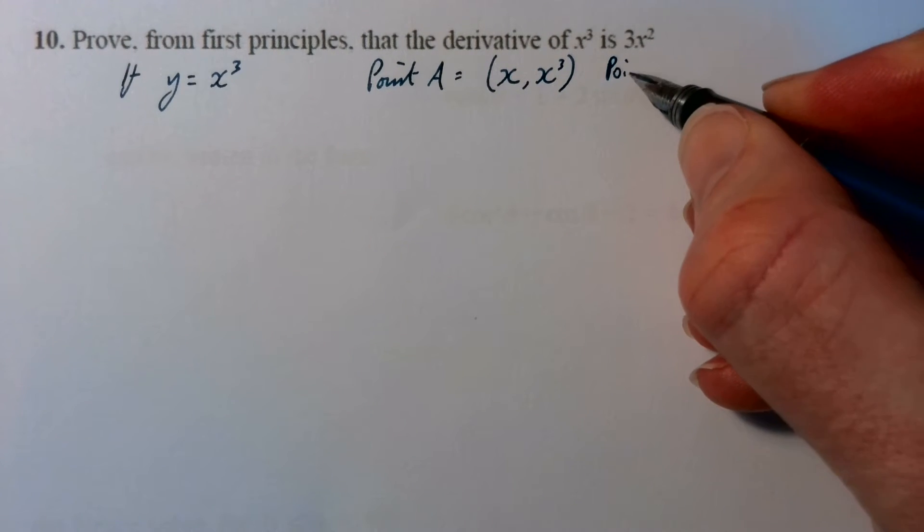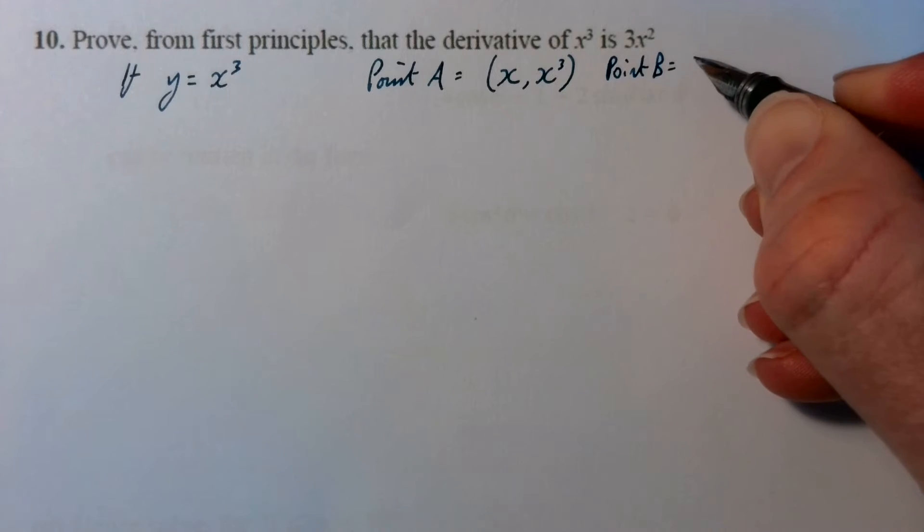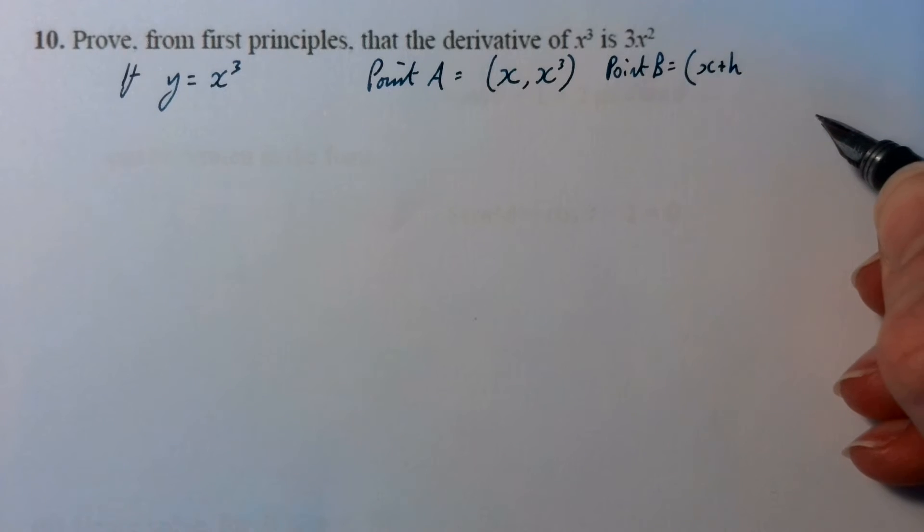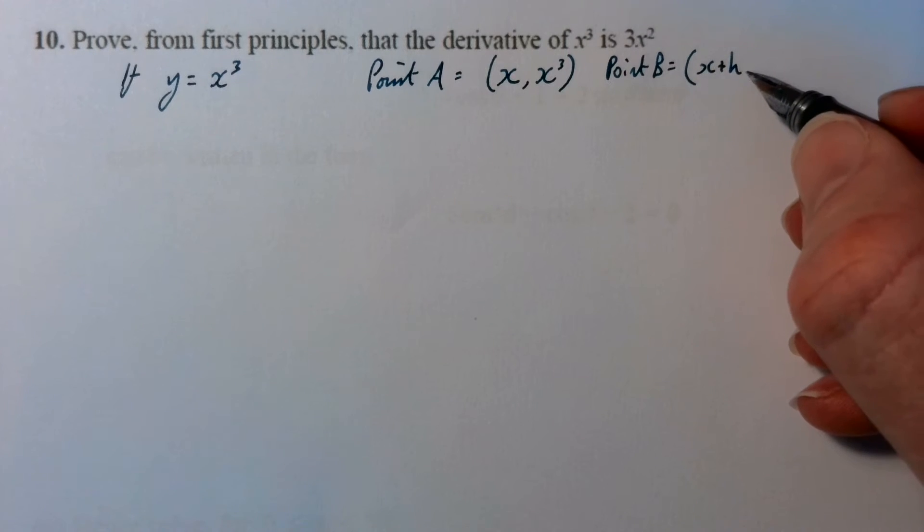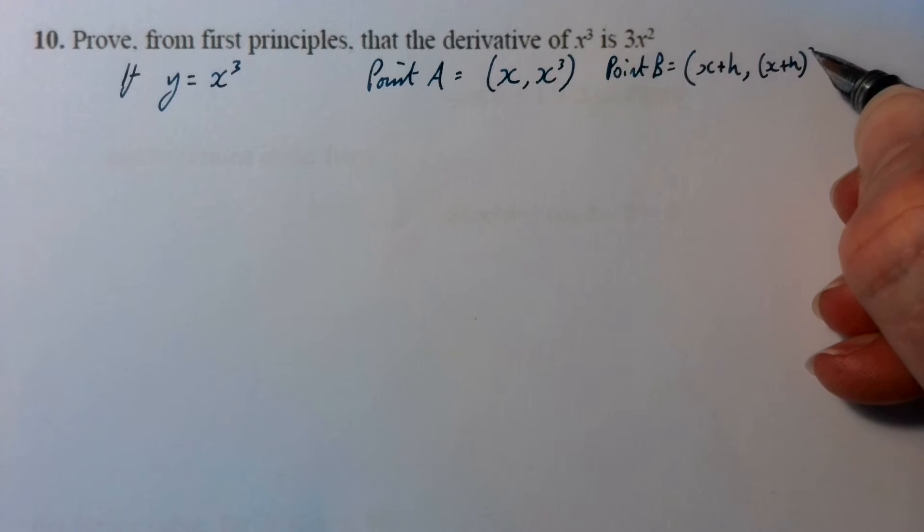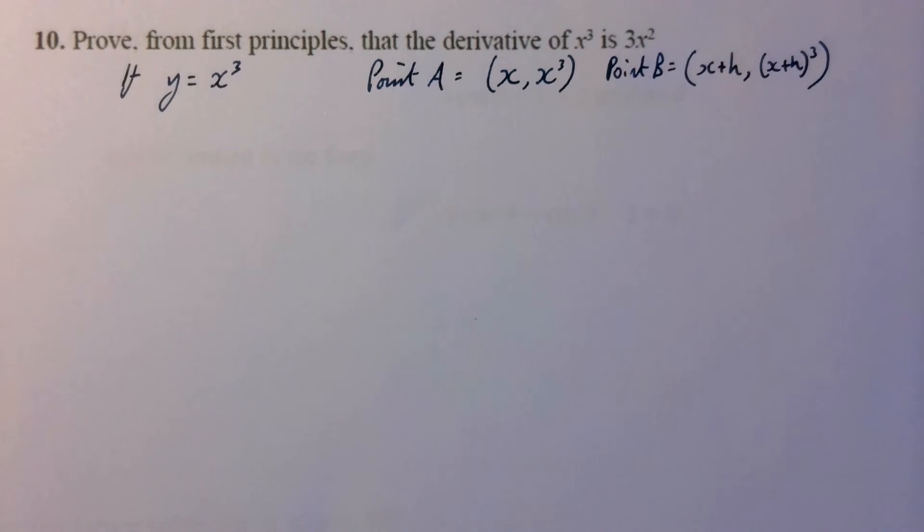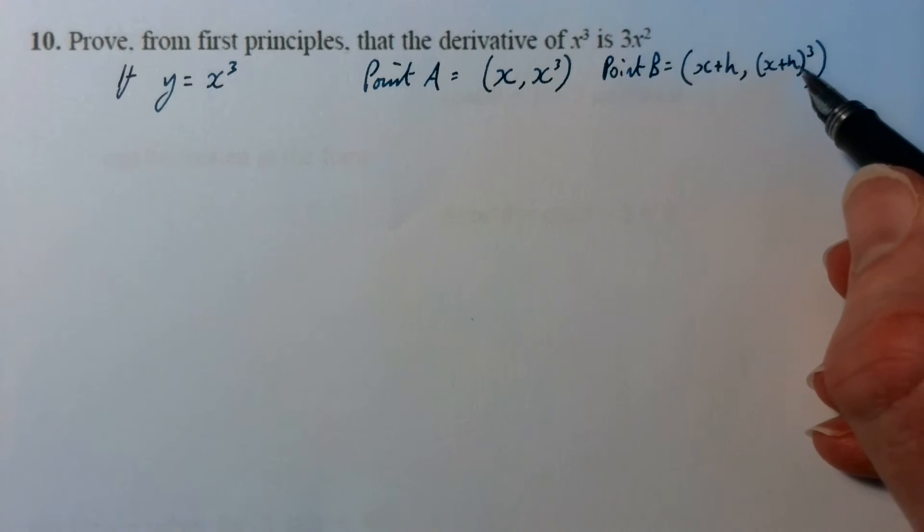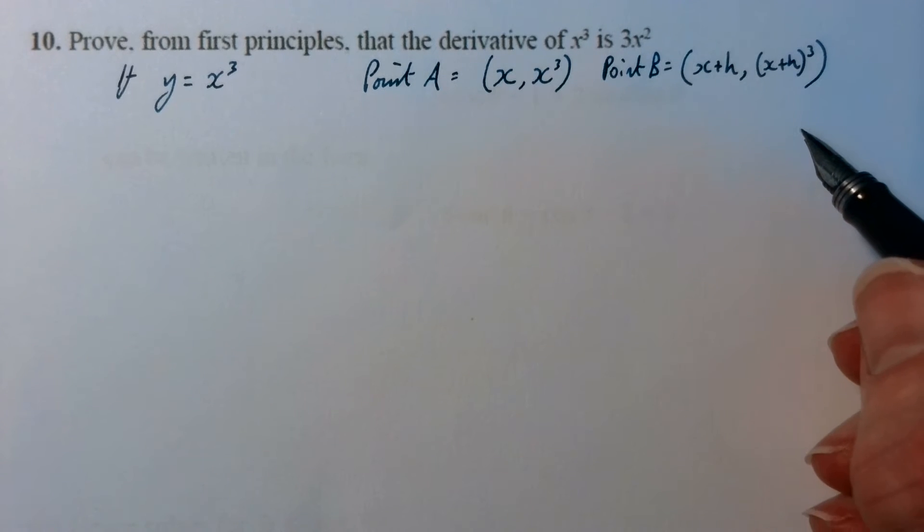Point B is going to be a little bit further along the x axis, and we're going to call that amount h. The y coordinate will be x plus h cubed. Now, what's going to be important before we go any further is expanding that bracket.